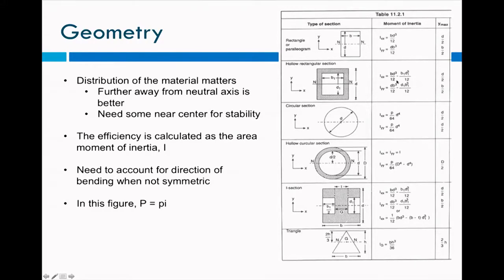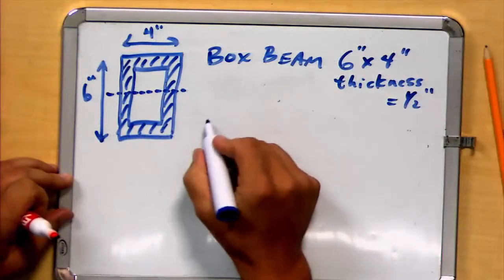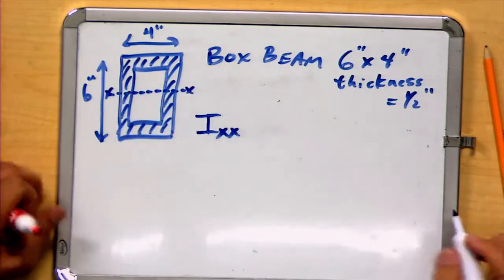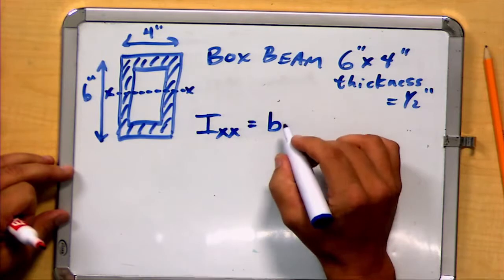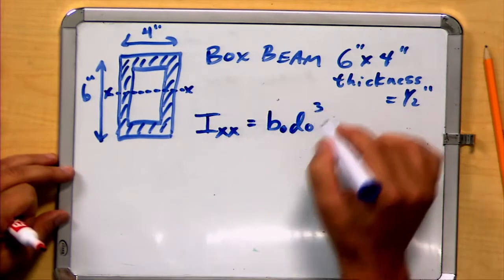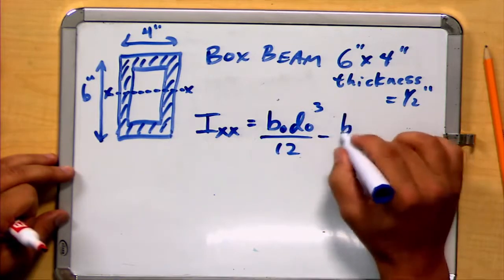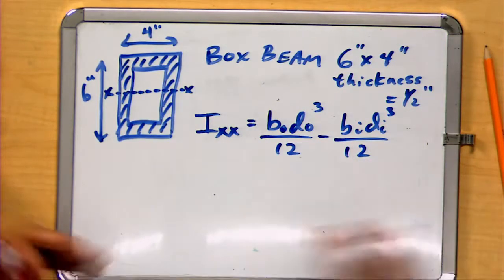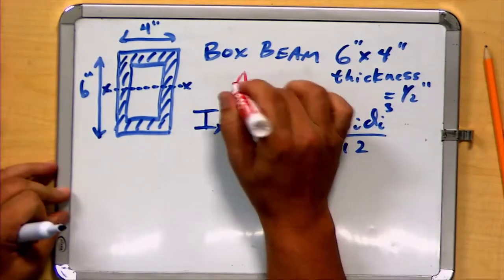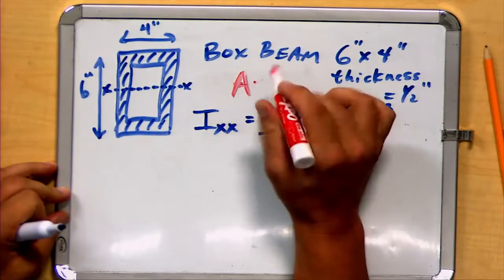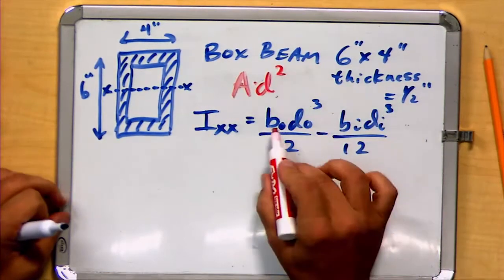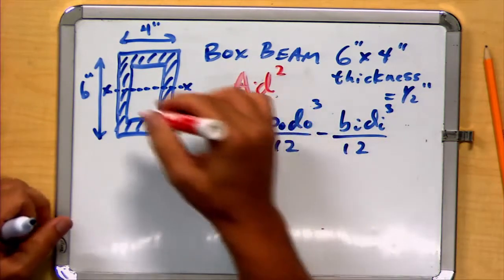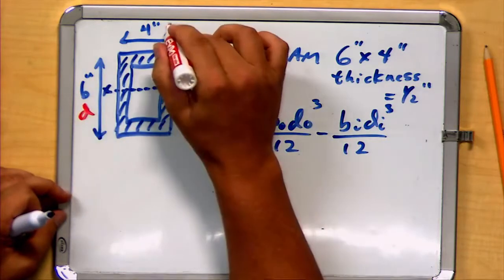We're going to go ahead and write those formulas down on our page here. So here's the formula for the moment of inertia around the x-axis. It's equal to B outside D outside cubed over 12, minus B inside D inside cubed over 12. Notice this has a little bit to do with our standard idea of area times D squared. B times D is effectively the area, and then you have two additional Ds involved, distances, where our D is going to be the 6 inches, and our B is going to be the 4 inches.